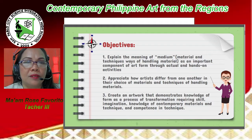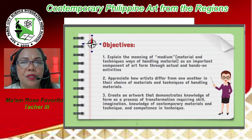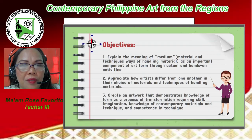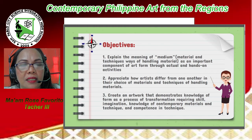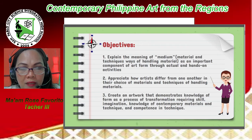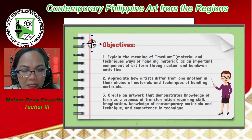At the end of the lesson, you are expected to: 1. Explain the meaning of medium, material, and techniques — ways of handling materials as an important component of art form through actual and hands-on activities. 2. Appreciate how artists differ from one another in their choice of materials and techniques. 3. Create an artwork that demonstrates knowledge of form as a process of transformation requiring skill, imagination, knowledge of contemporary materials and techniques, and competence in techniques.